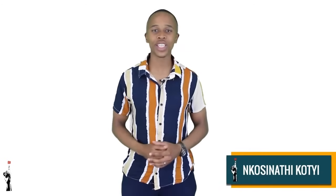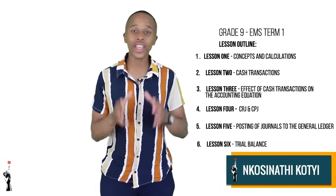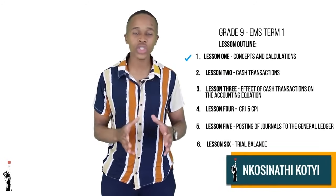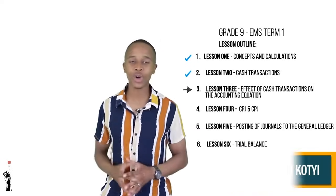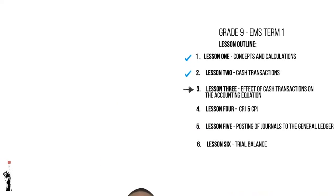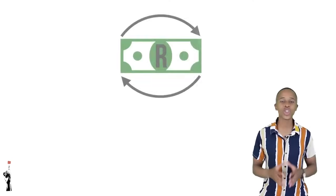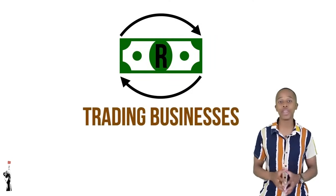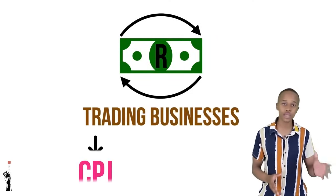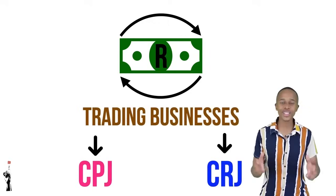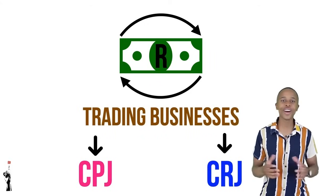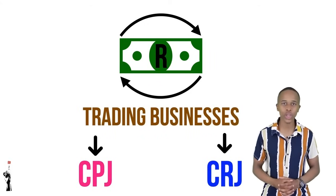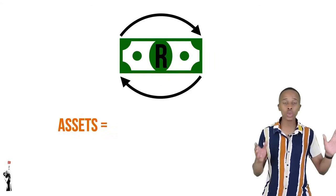Good day Grade 9 learners and welcome to Tumamina Teaching. In this lesson today we'll be looking at cash transactions and how they affect the accounting equation. In the previous lesson we looked at the cash transactions that affect trading businesses and how they affect the CPJ and the CRJ.